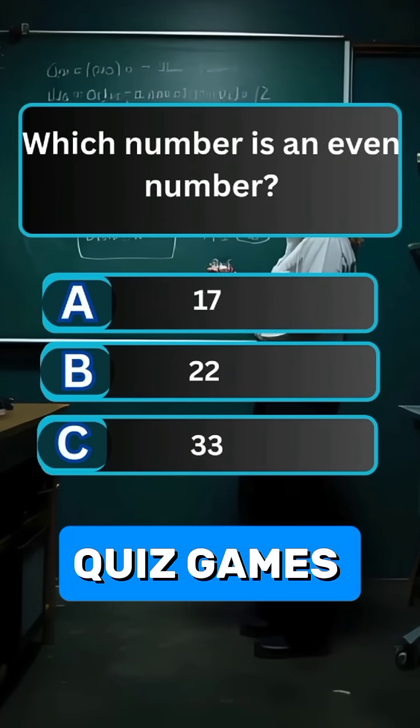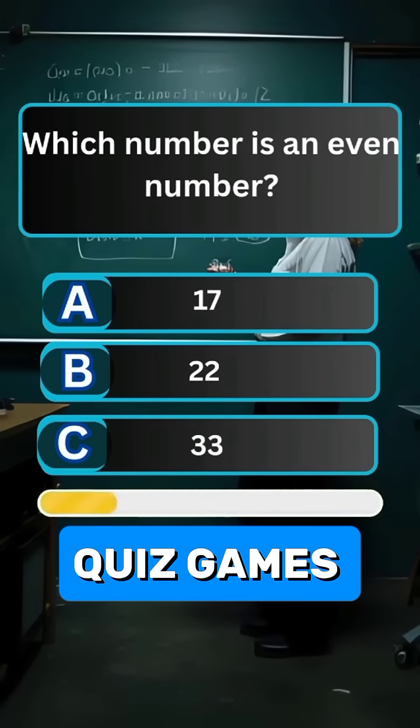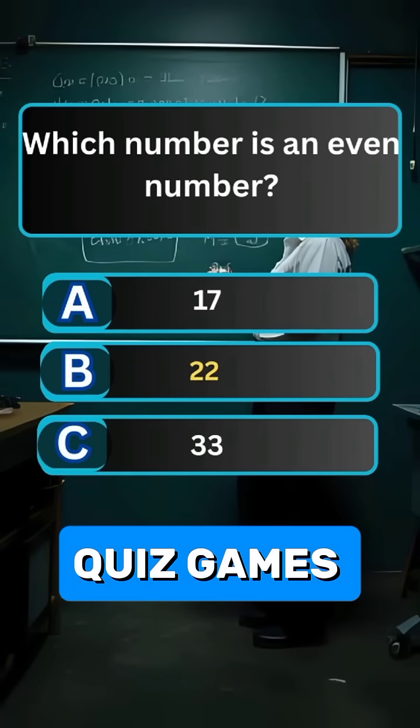Question 4. Which number is an even number? Answer B. 22.